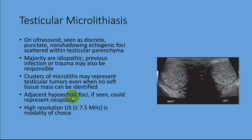Adjacent hypoechogenicity, if seen, could represent neoplasm adjacent to the microlithiasis. We should use a probe of at least 7.5 megahertz to visualize the microlithiasis.